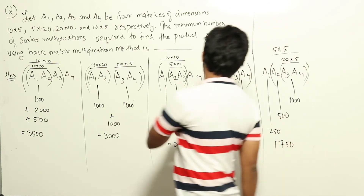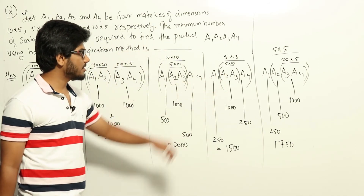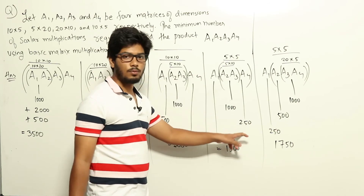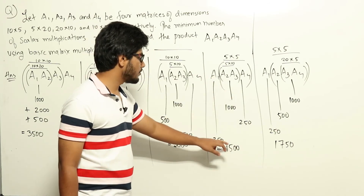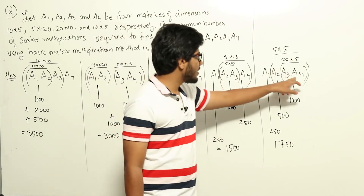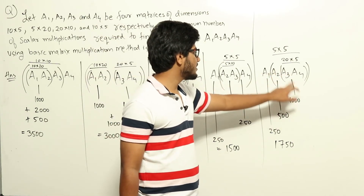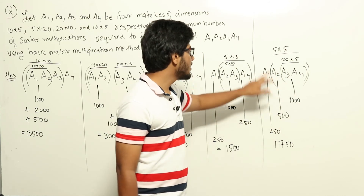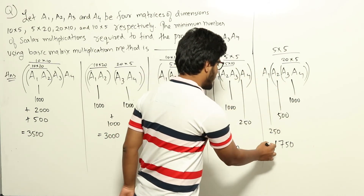Chain 4 — A2 and A3 multiplied together gives 1000, then multiplying A4 adds only 250, then multiplying A1 adds only 250, for a total of 1500. Chain 5 — A3 and A4 gives 1000, multiplying A2 adds 500, then multiplying A1 adds 250, for a total of 1750.